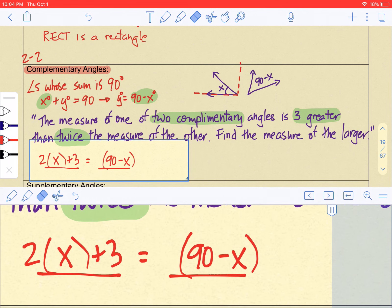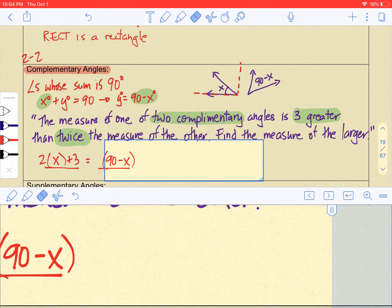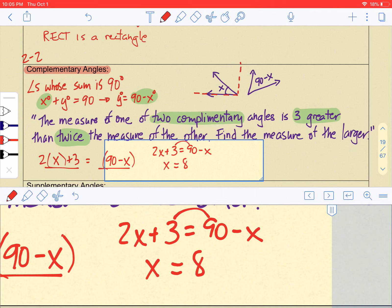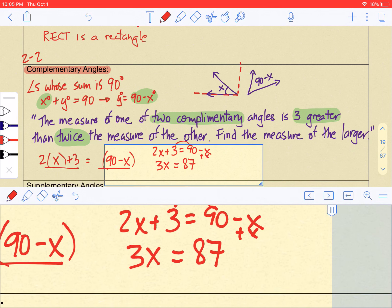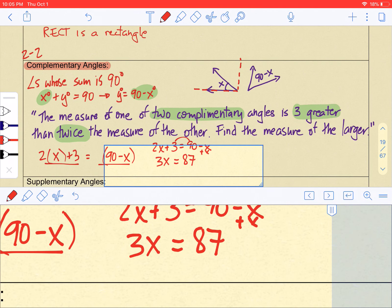Now I'm going to solve this algebra problem. So we have 2x plus 3 equals 90 minus x, right? Just dropping the parentheses. Slide the x over. This side becomes x. Slide 3 over. This becomes 87. This side becomes 3x, right? Because I add x. Almost made a classic error there. Divide both sides by 3.